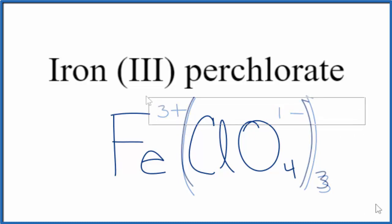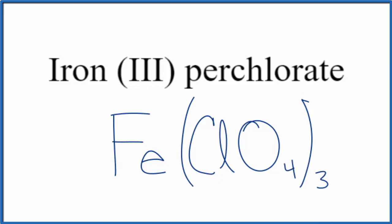So this is the correct formula for iron three perchlorate, Fe(ClO4)3. This is Dr. B and thanks for watching.